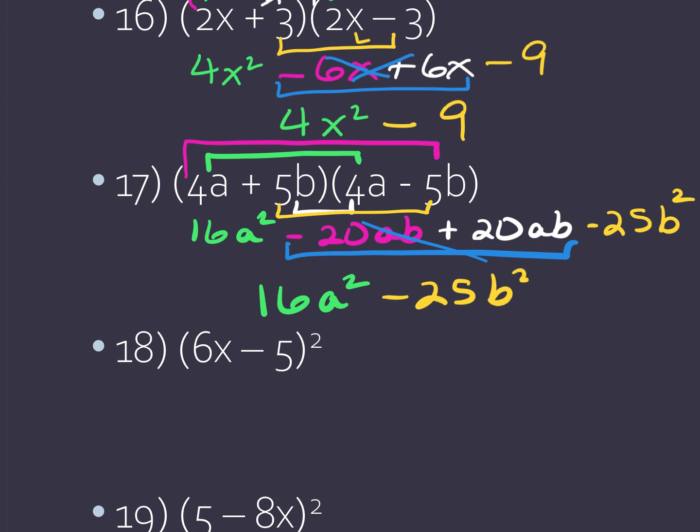I'm now going to combine my middle terms. Notice they cancel out — negative 20ab plus 20ab is gone. So now I'm left with 16a squared minus 25b squared. Again, two perfect squares joined by a subtraction sign — the difference of two squares.